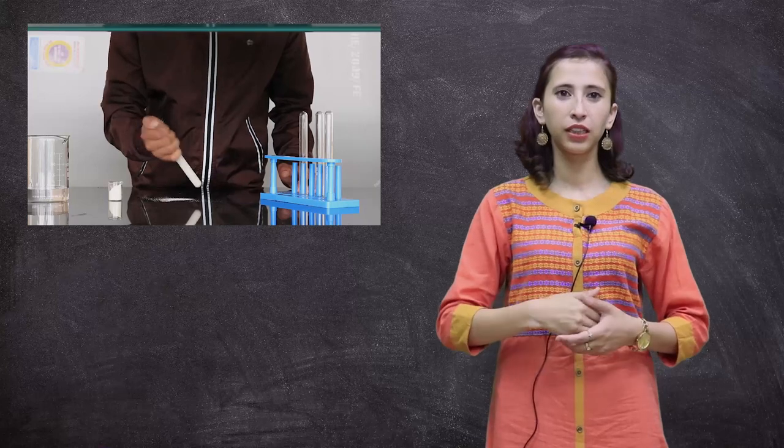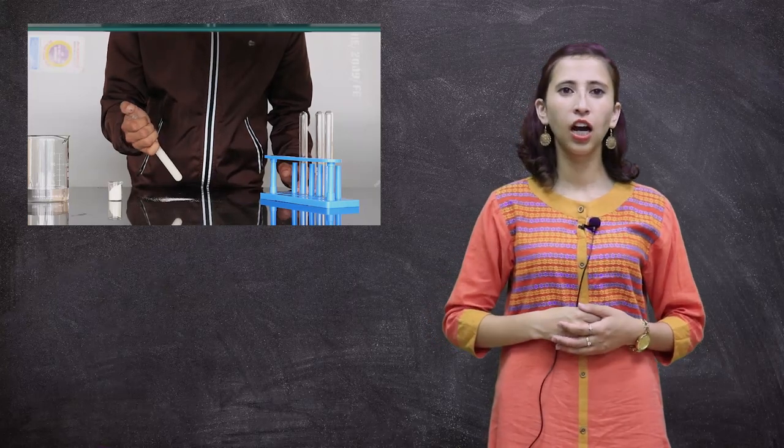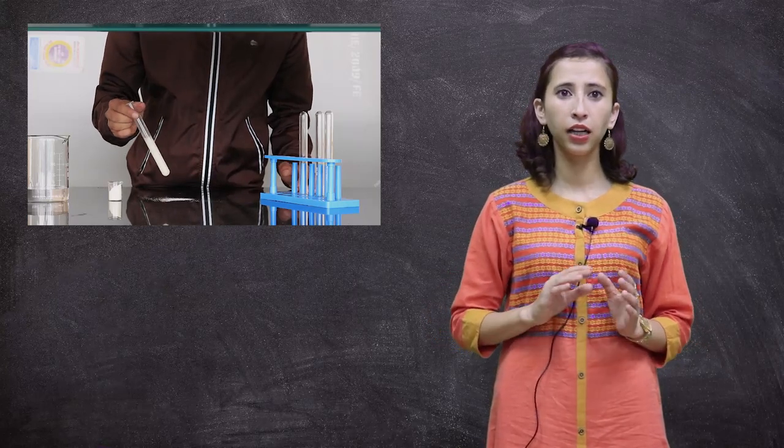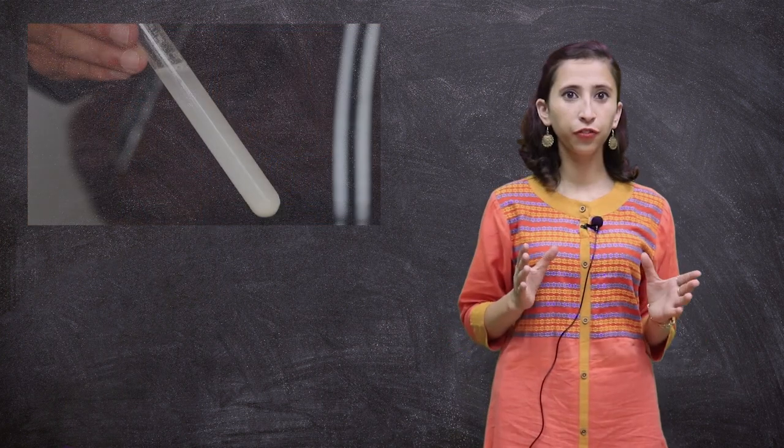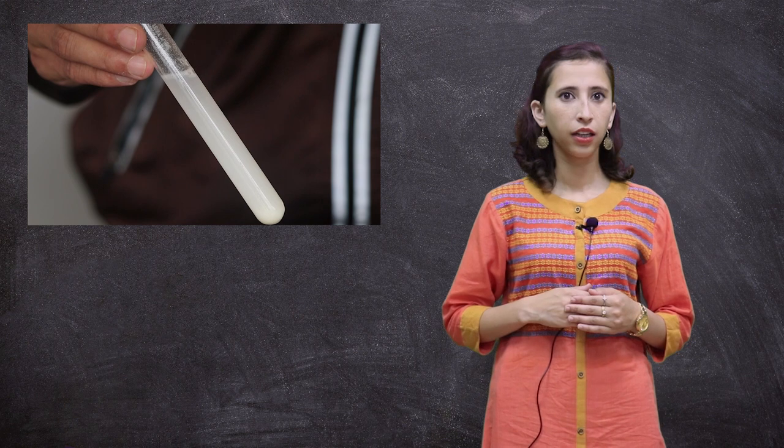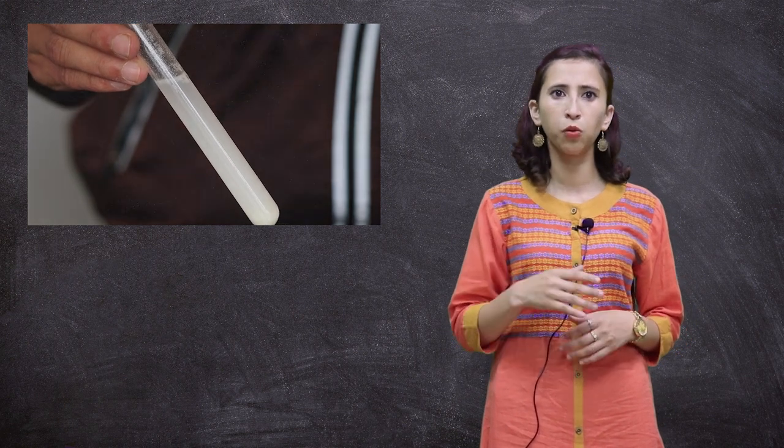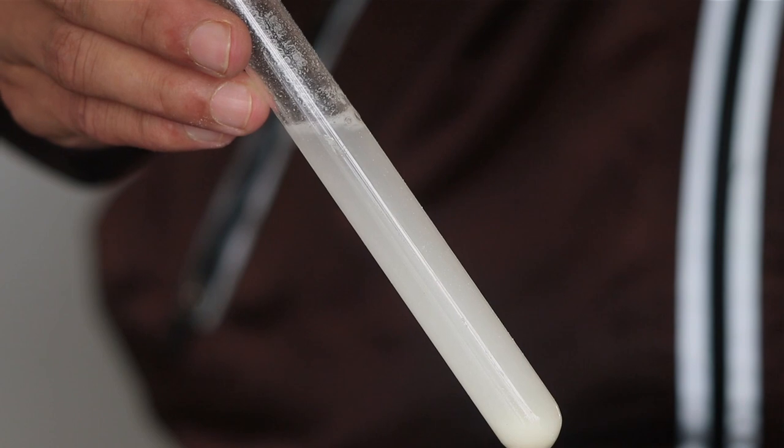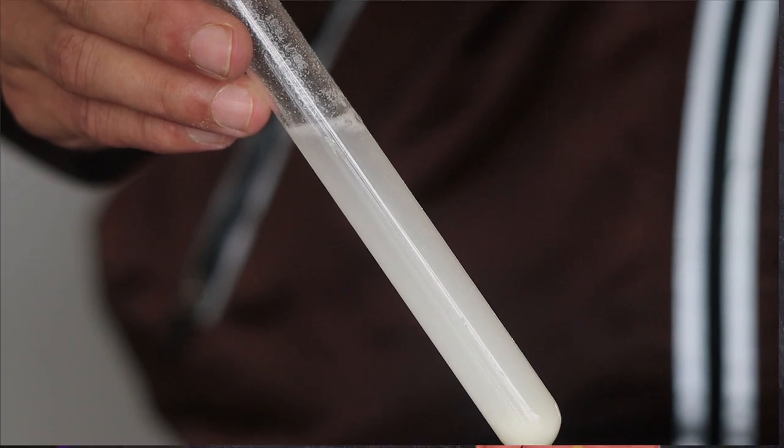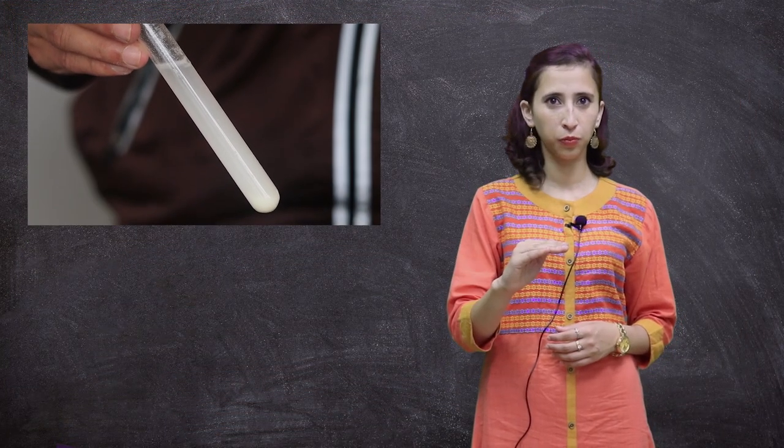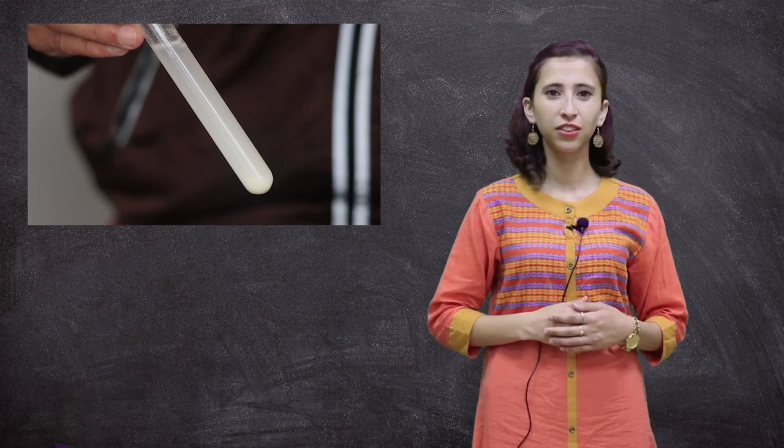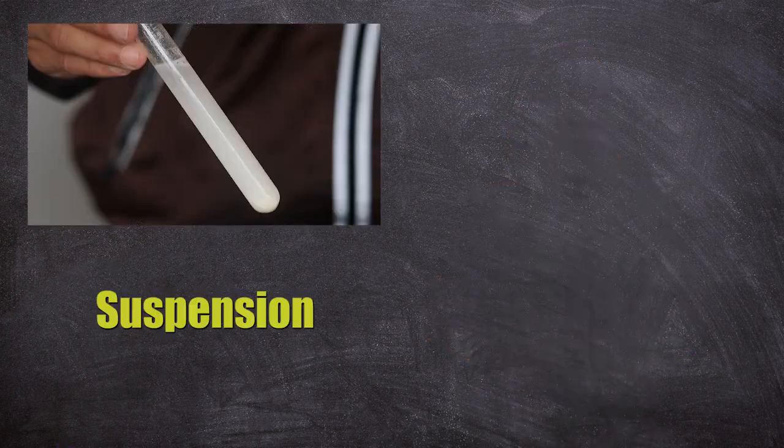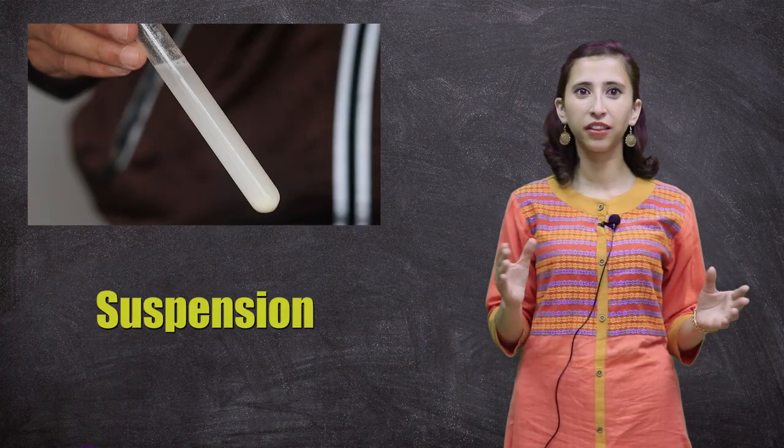The second test tube is mixed with wheat flour. After stirring, it is kept undisturbed for a few minutes. After a few minutes we can see that the mixture is not homogeneous, since we can see the flour settling down at the bottom of the test tube. This type of mixture is called suspension, since the particles are suspended in the liquid.